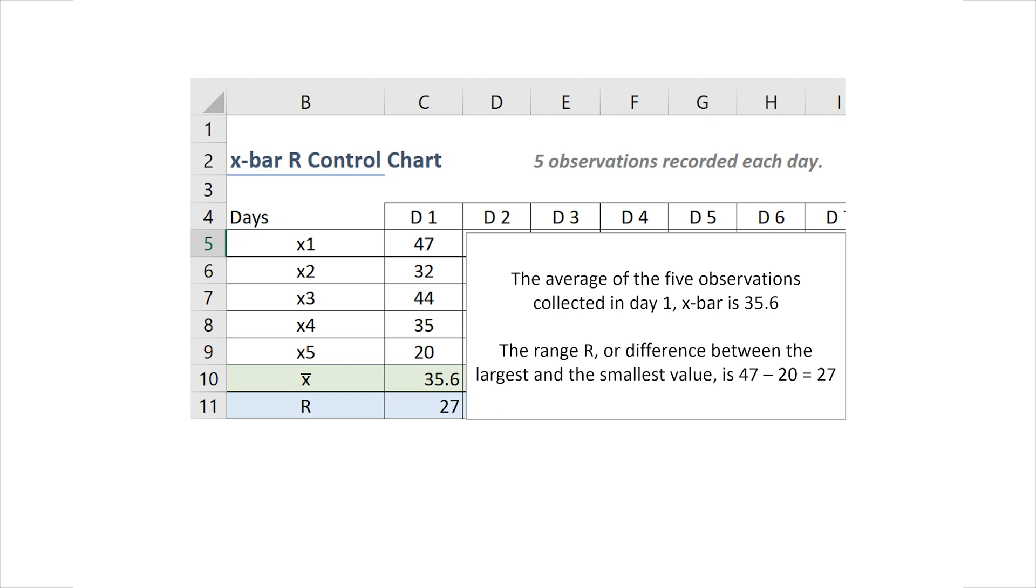Now, at the end of every day or collection period, we're going to calculate the average of the five observations, which in this case is 35.6. This is what we call X-bar. Also, we will calculate the range or difference between the largest and smallest value, which in this case is 47 minus 20, equal to 27.